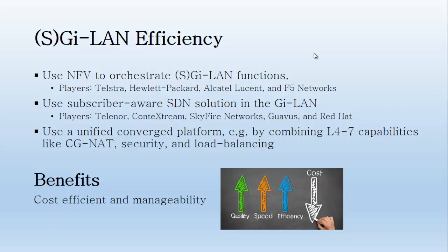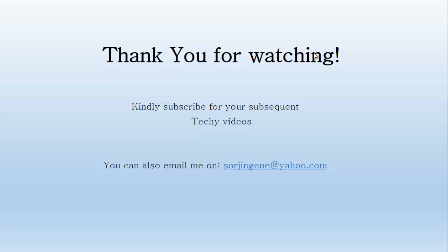And you begin to ask yourself: why do you need the SGI LAN to be efficient? There are a couple of benefits, and the most important is cost efficiency — it helps you manage your network. For most people in the telecoms industry, a converged platform is on the rise because of total cost of ownership, power conversion space, and O&M manageability. Overall, it's important that networks begin to look at how to utilize the SGI LAN for efficiency, so that with 5G, cloud, and IoT, you begin to understand how to use things like network slicing to achieve more functionality and efficiency at a lower cost. Thank you for watching, and I hope this has been informative.